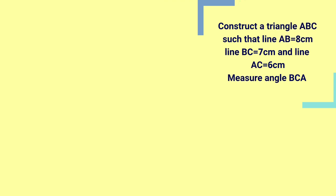The question we have for today says we should construct a triangle ABC such that line AB is equal to 8cm, line BC equal to 7cm, and line AC equal to 6cm.